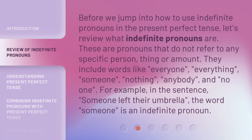Before we jump into how to use indefinite pronouns in the present perfect tense, let's review what indefinite pronouns are. These are pronouns that do not refer to any specific person, thing, or amount. They include words like everyone, everything, someone, nothing, anybody, and no one. For example, in the sentence 'Someone left their umbrella,' the word 'someone' is an indefinite pronoun.